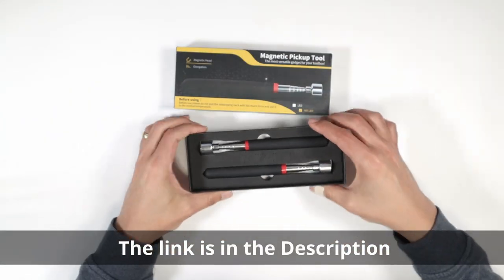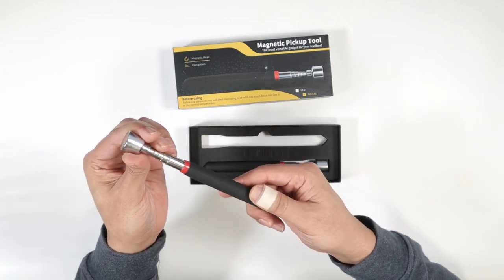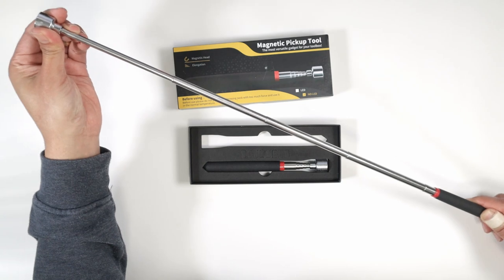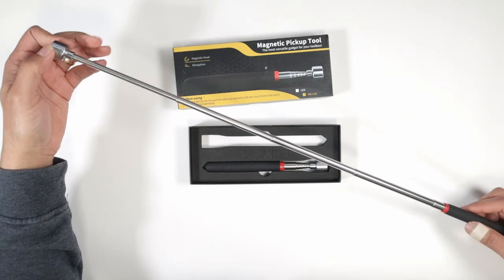So here we have it. We have two of them. It's basically a tool that you can pick up stuff with this telescopic thing here. You see how much it can open? It's a lot. Pretty good.